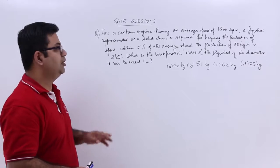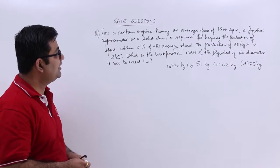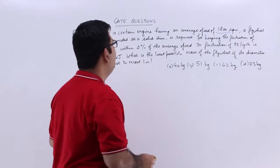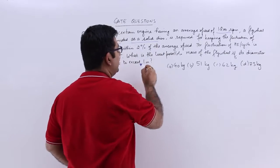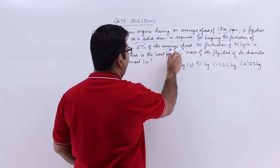Now let's talk about question 13. Question 13 is also on flywheels. It says that for a certain engine having an average speed of 1200 rpm, a flywheel approximated as a solid disc is required for keeping the fluctuation of speed within 2% of the average speed.